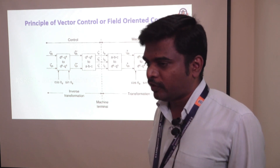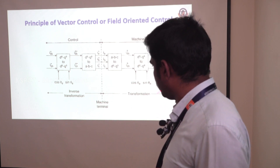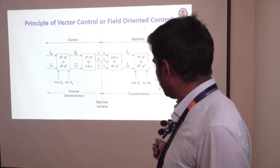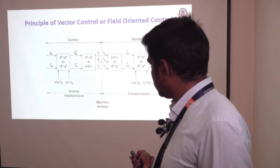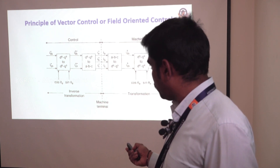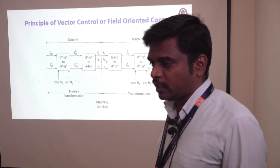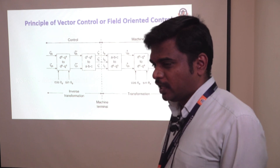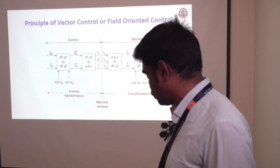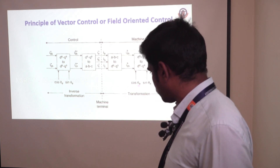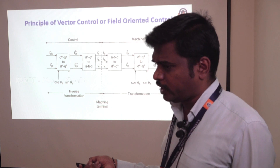Next we are looking at how vector control is implemented in the induction motor. The block diagram shows some transformations and mentions control variables and machine parameters. It gives two types of equivalent block diagrams: one for the control structure and another for the machine structure. The inverter is omitted here, assuming it provides unity current gain. A sequence transformation is done on the control structure side, and the induction machine also undergoes a transformation.